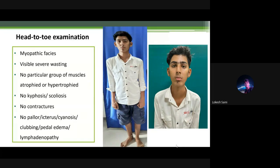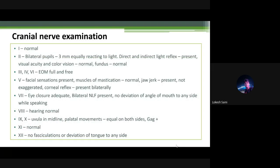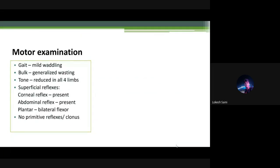On head-to-toe examination, the child appeared to have a myopathic facies — tall, elongated, with severe wasting. No particular group of muscles was atrophied or hypertrophic. No kyphosis, scoliosis, contractures, pallor, icterus, cyanosis, clubbing, pedal edema, or lymphadenopathy. Systemic examination and higher mental functions were essentially normal. Motor examination revealed mild waddling, very subtle, exaggerated on toe walking. Bulk examination revealed generalized thinning and wasting. Tone was decreased in all four limbs. No abnormalities in superficial reflexes, no primitive reflexes or clonus.